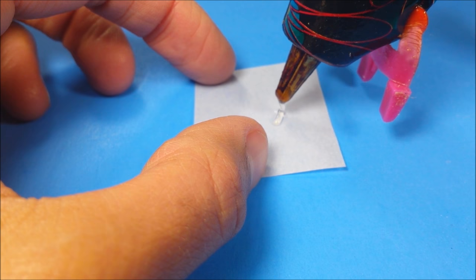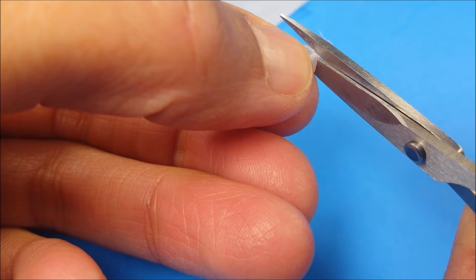I add some more hot glue, just a really thin amount. And when it dries I cut it into a triangle.